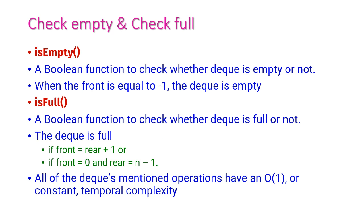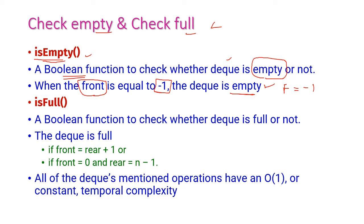Now let us see the operations to check whether the DEQ is empty or full. The isempty function is a Boolean function — if the front pointer value is minus 1, then we can declare the DEQ is empty. The isfull function is also a Boolean function with two conditions: if front equal to rear plus 1, then DEQ is full; or if front equal to 0 and rear equal to n minus 1, then the DEQ is full.